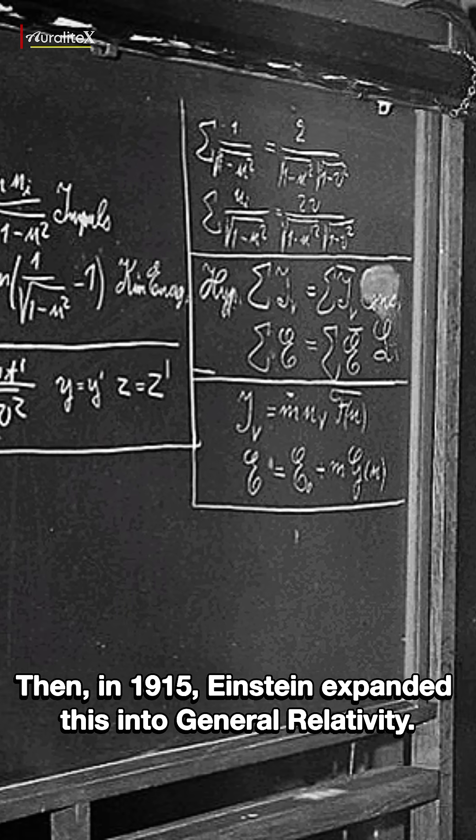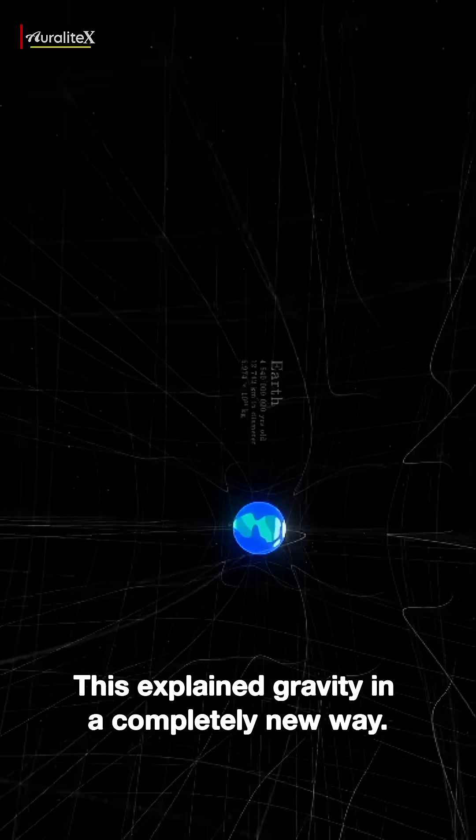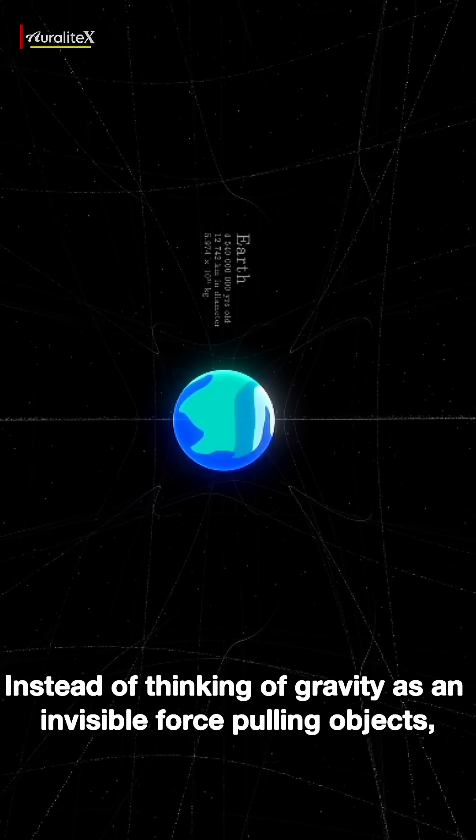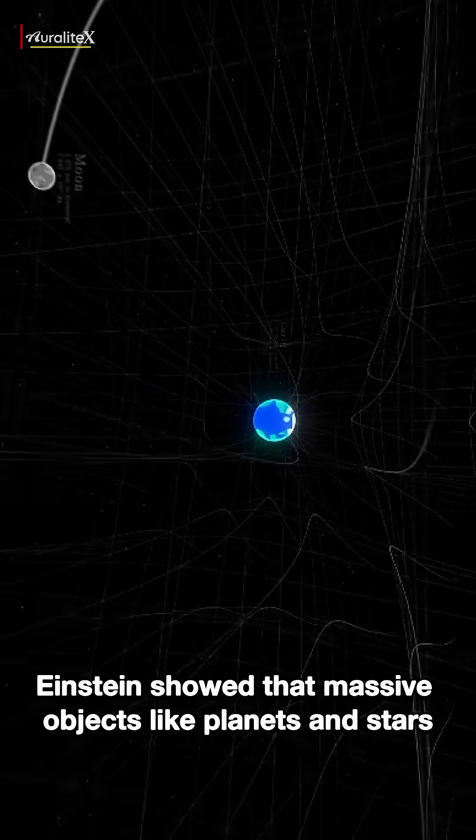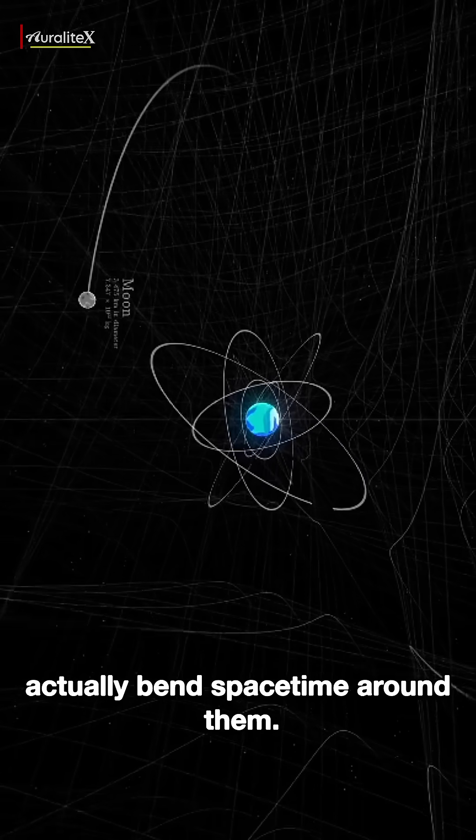Then in 1915, Einstein expanded this into general relativity. This explained gravity in a completely new way. Instead of thinking of gravity as an invisible force pulling objects, Einstein showed that massive objects like planets and stars actually bend spacetime around them.